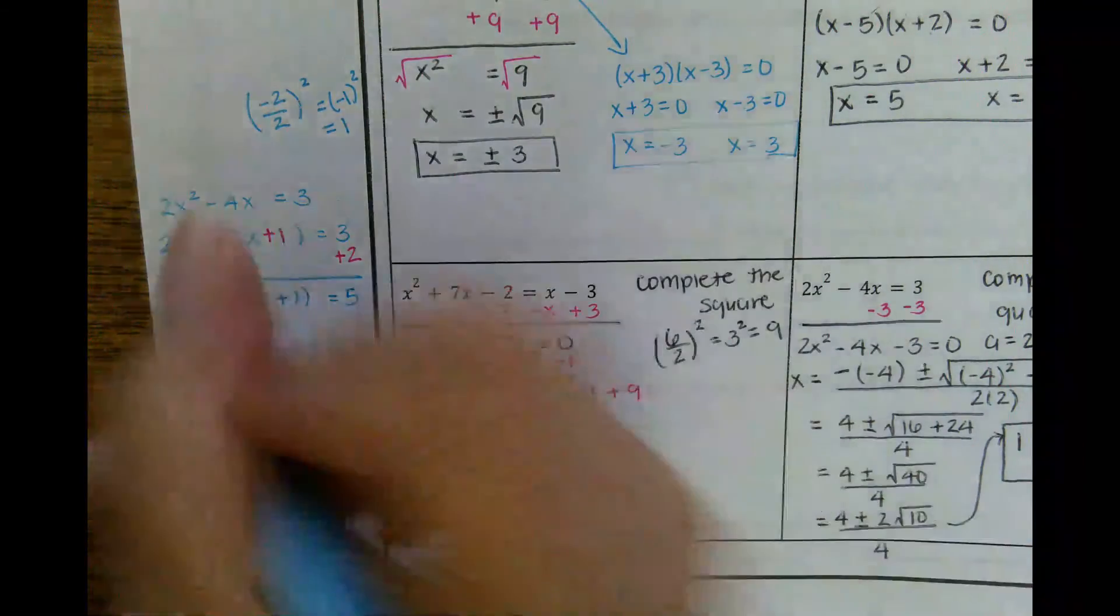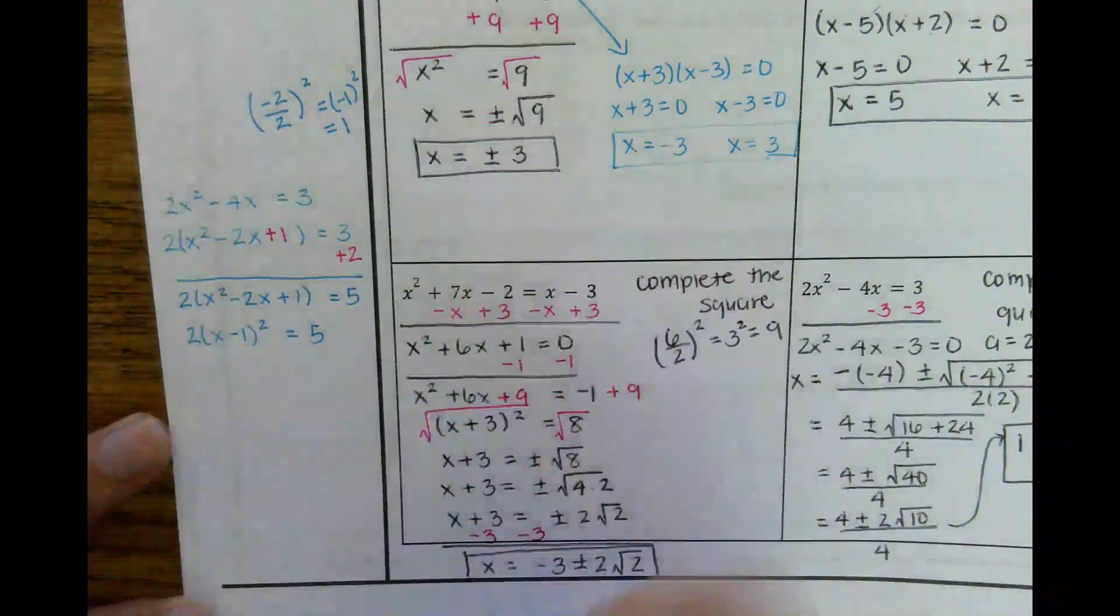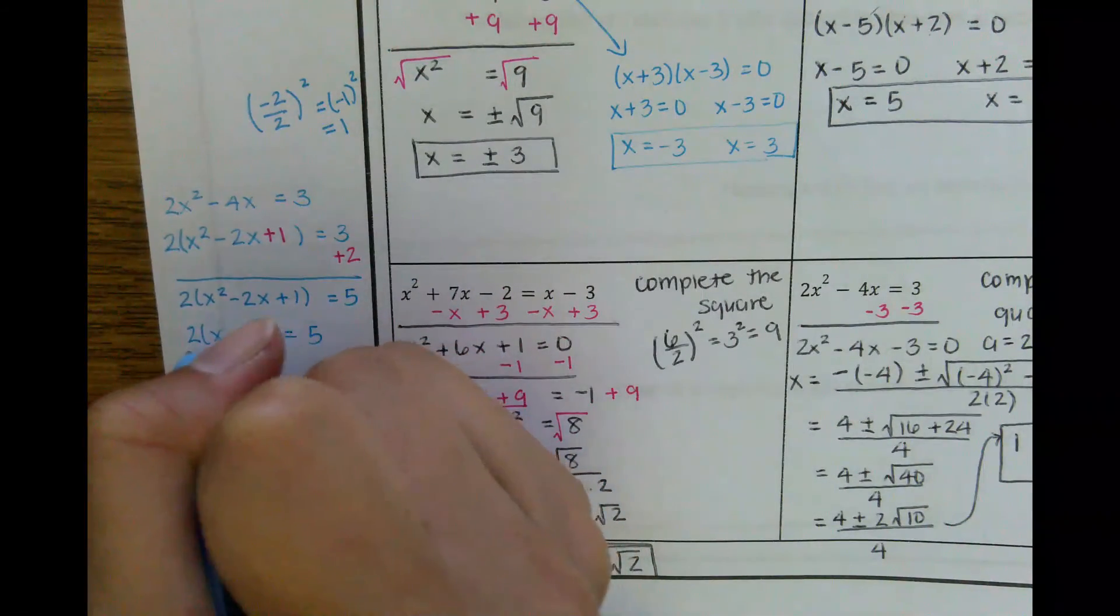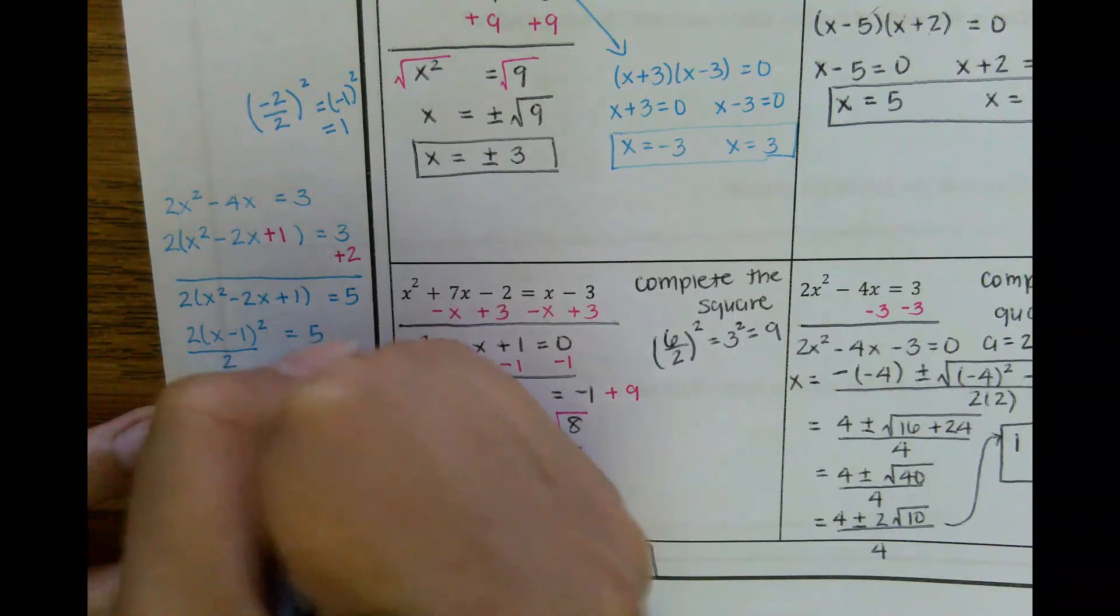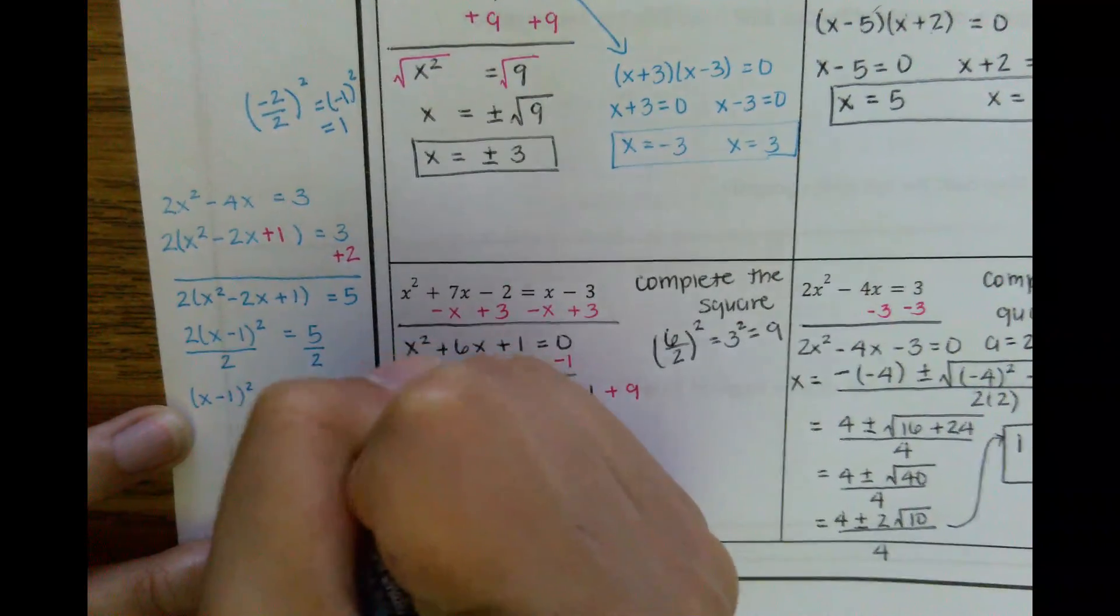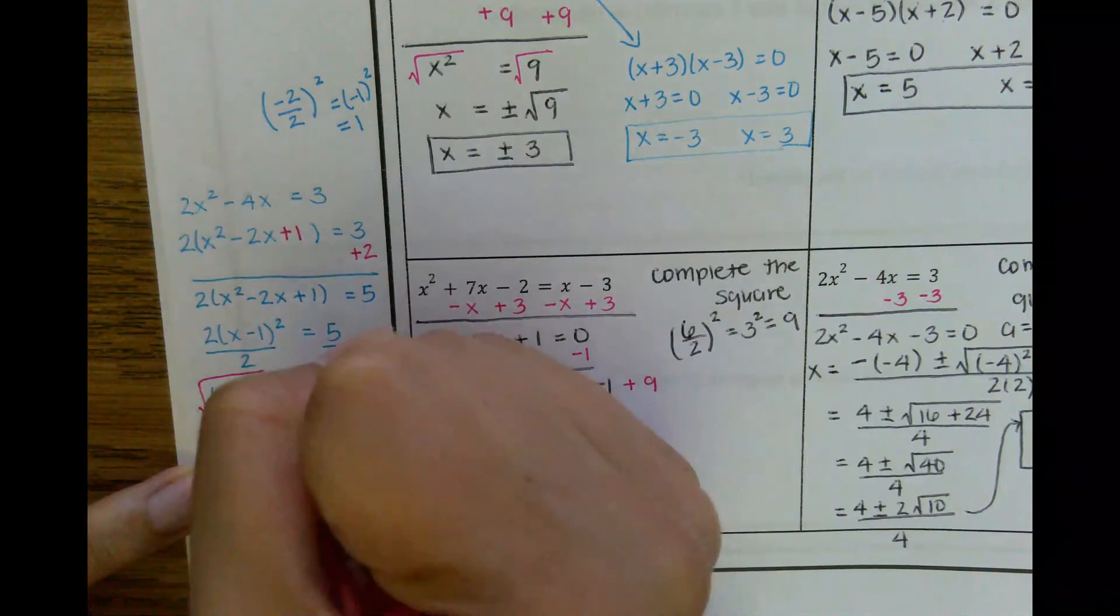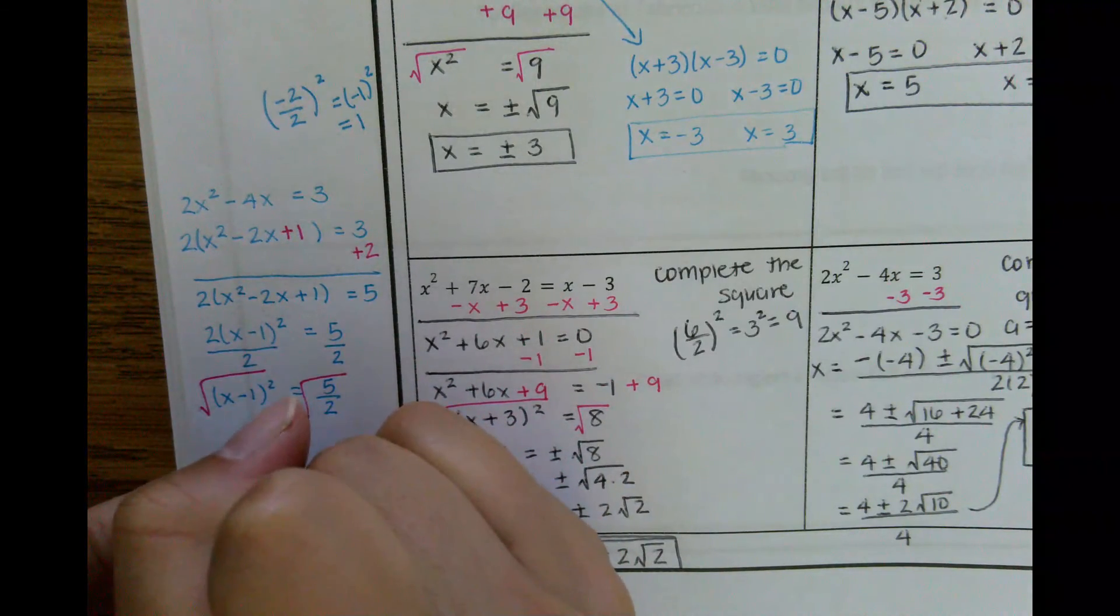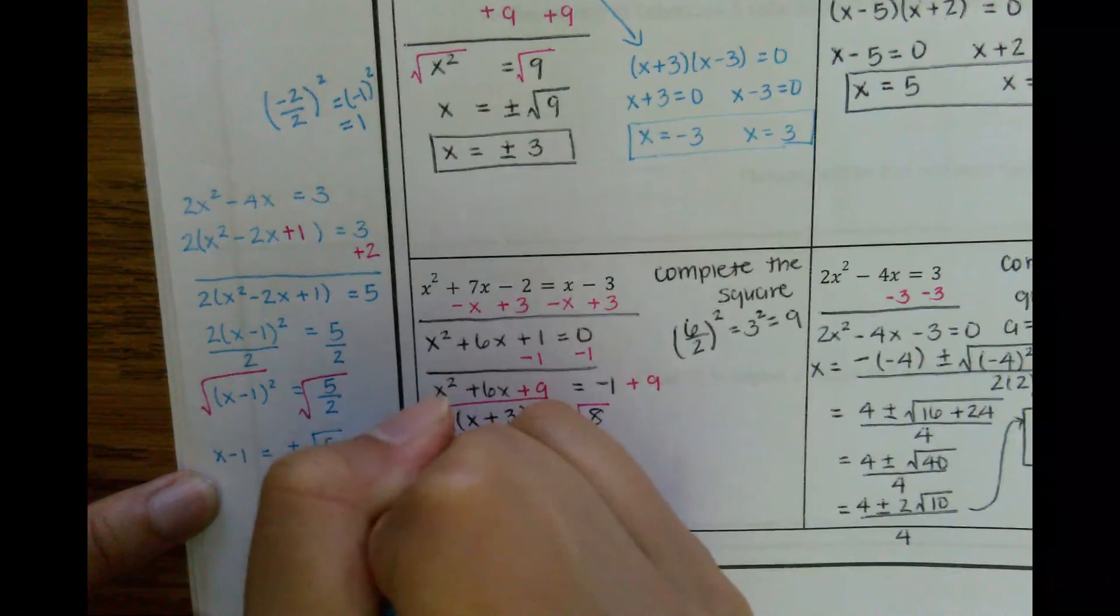Then I'm going to factor x minus 1 squared equals 5. Then I'm going to divide by 2. This gives me x minus 1 squared equals 5 halves. Then to get rid of the square, I'm going to square root both sides.